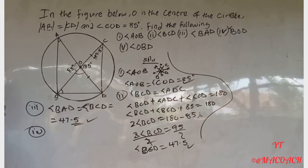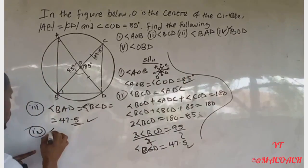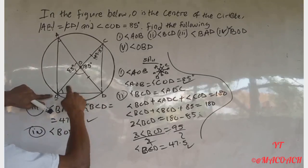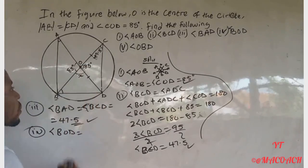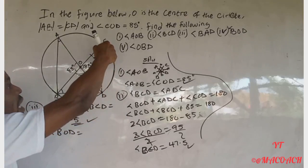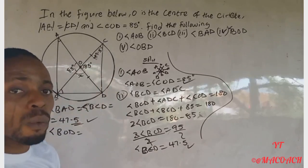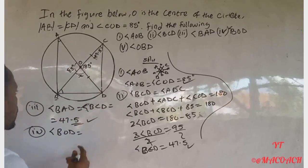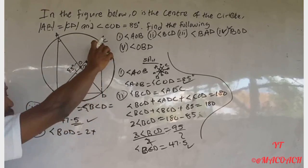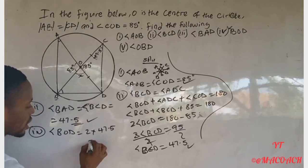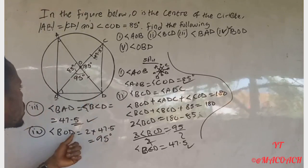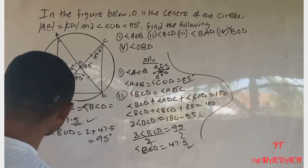For question four, we want to find angle BOD — this angle at the center. You should remember that the angle at the center is twice the angle at the circumference. So angle BOD equals 2 times 47.5°, which gives 95°. Therefore angle BOD equals 95°. Question four is done.